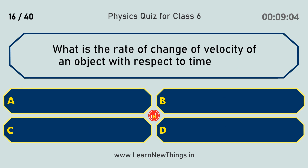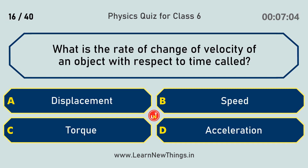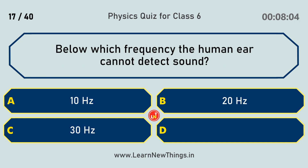What is the rate of change of velocity of an object with respect to time called? Acceleration. Below which frequency can the human ear not detect sound? 20 Hz.